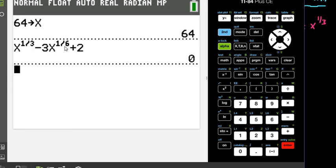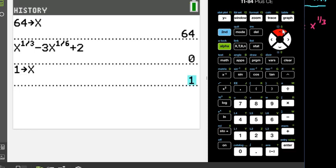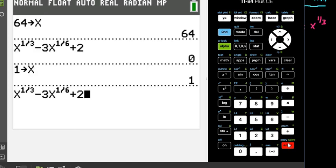We could easily check the second one by just doing 1 store x and then enter. And then I can come back instead of having to retype this whole thing in. I can just come up and grab it by hitting the up arrow key and hit enter, and enter again. And we can see that that also works. So both of these solutions do work.